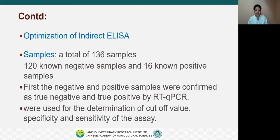After the assay was optimized, a total of 136 samples from sheep were collected. Out of 136 samples, 120 samples were collected from slaughterhouses of Gansu province, and 16 positive samples were collected from PPR-infected sheep during post-mortem examination. These samples were confirmed as true positive and true negative by RT-qPCR test. After that, these samples were used for the determination of cutoff value, specificity and sensitivity of the assay.